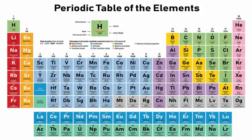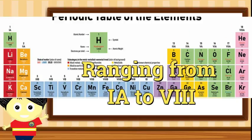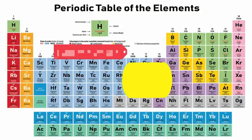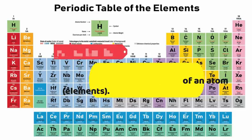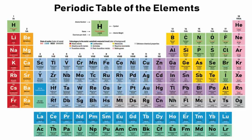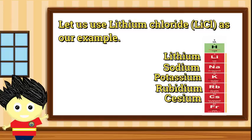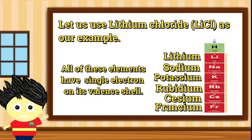Ngayong hawak mo na ang iyong periodic table, mapapansin natin na sa vertical alignment ng mga elements, may makikita tayong mga numbers in roman numerals from 1 to 8. Nagkakaroon pa ng pagkakataon na ang ilan sa mga ito ay may A at B. Ang mga numero na ito ay tinatawag nating family or group numbers. Ito ang gagamitin natin upang malaman ang bilang ng electron sa valence shell ng isang element na gagamitin natin during the bond. Halimbawa, ang lithium, sodium, potassium, rubidium, cesium at francium ay mga metal elements na nasa family 1. Nangangahulugan lamang nito na lahat ng elements na kabilang sa family 1 ay may isang electron sa valence shell nito.